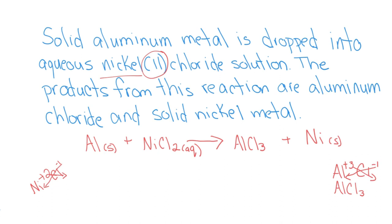The products from this reaction are aluminum chloride and solid nickel metal. So aluminum chloride, its state is going to be AQ. And the reason I know that is because aluminum is a solid, and I'm putting it into a solution. And the equation told me that nickel becomes a solid. So aluminum chloride has to be in solution.